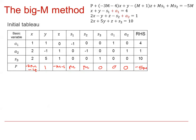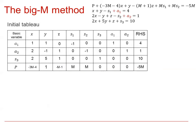Now we are ready to find our pivot element. We look for the most negative element in the objective row. The two negative elements are minus 3m minus 4 and minus m minus 1. The most negative is minus 3m minus 4, so x becomes our pivot column. Using the ratio test, we get results of 4, one half, and 5. One half is the smallest, so 2 in the second row is our pivot element.